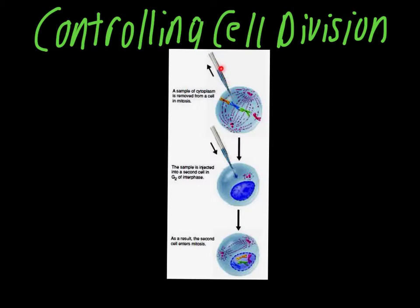They then take that cytoplasm, and they inject it into a cell that's in G2 stage of interphase. So it's gone through most of interphase, but it hasn't started dividing yet. Once they injected that cytoplasm from the cell that was undergoing mitosis, the cell that was in metaphase, into the cell that was in G2 phase, that cell immediately begins to enter the process of mitosis.